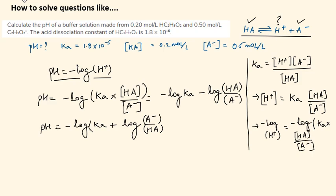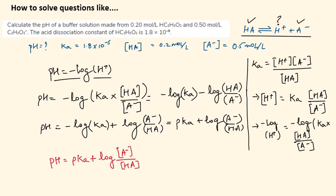Now negative log of Ka can be also written as pKa. So I am writing this as pKa plus log of A minus over HA. Everything is in concentrations. So we get an equation. This is the beautiful equation I was talking about. pH equals pKa plus log of A minus over concentration of HA. Now this question has a name.